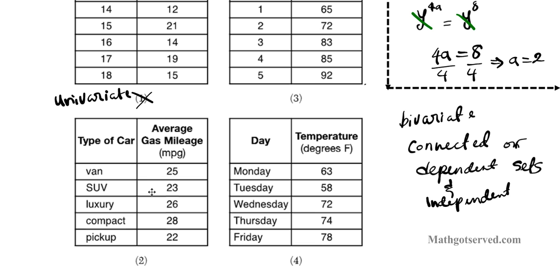Or the SUV for example, what kind of SUV is it? Is it a Hummer SUV or what kind of SUV? Just telling you the type of car does not automatically tell you the gas mileage. There isn't a direct connection. It's kind of a weak type of connection but it's not direct. So this one right here is univariate. Because they're two independent data sets.